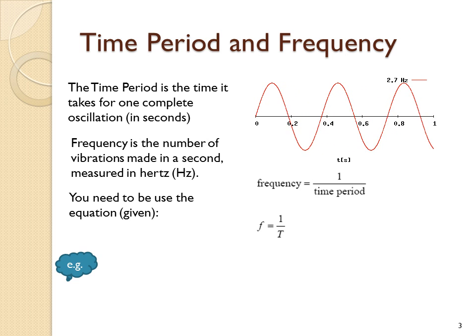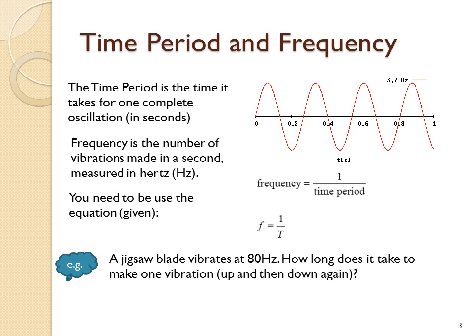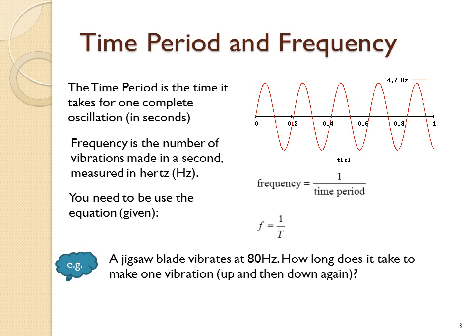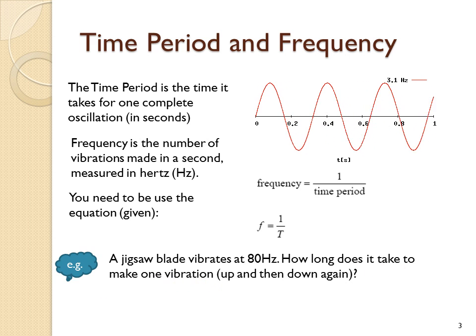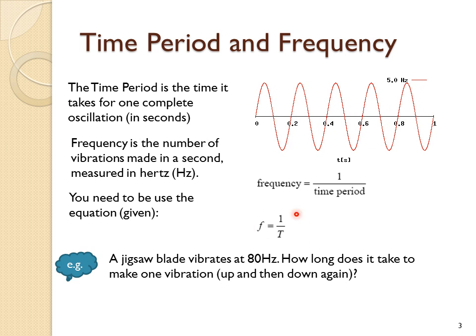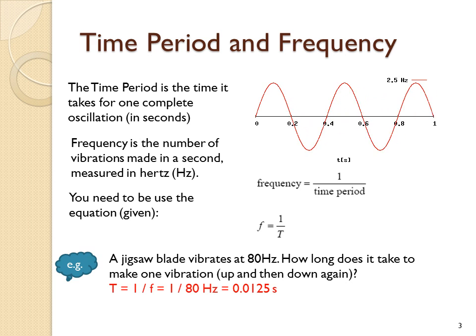Here's an example using that equation. If a jigsaw blade vibrates up and down at a frequency of 80 hertz, how long does it take to make one complete vibration? You'd rearrange this formula to make T the subject: T equals one over F. Substitute the data, 80 hertz. One over 80 is 0.0125 seconds. That's the time period for the jigsaw blade.